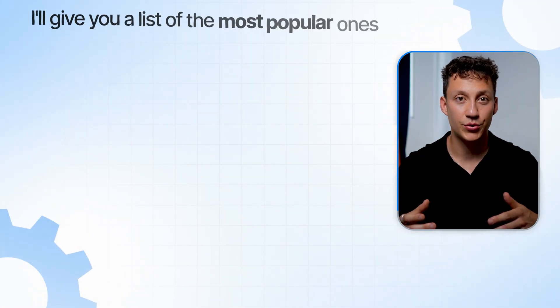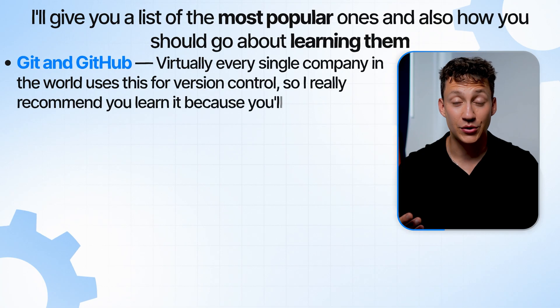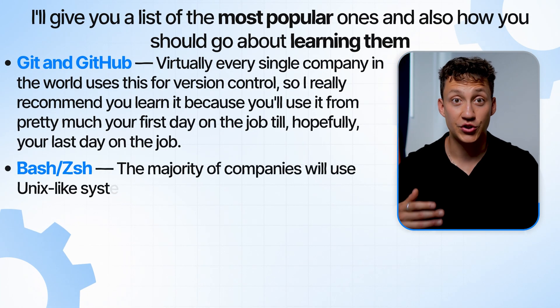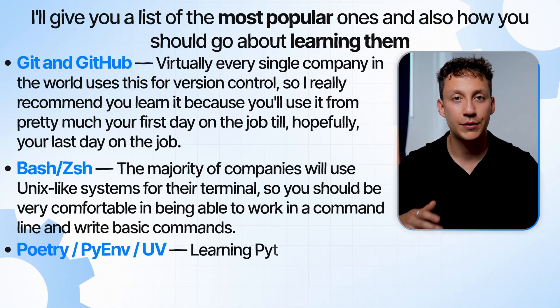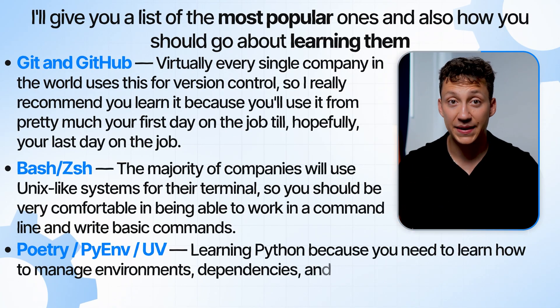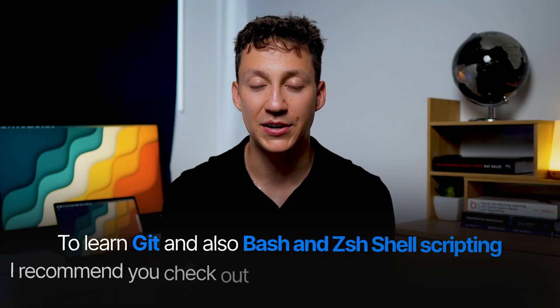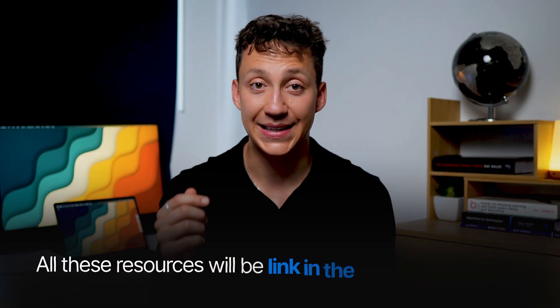As well as Python and SQL, it's well worth learning other technologies you'll use on the job. First is Git and GitHub — virtually every single company uses this for version control, so learn it because you'll use it from your first day. Second is bash or z-shell, as most companies use Unix-like systems, so you should be comfortable working in a command line. Finally, I recommend learning Python Poetry to manage environments, dependencies, and Python versions. For Git and bash, check out the free freeCodeCamp videos, and for Poetry, UV and PyEnv, check out the Real Python articles. All resources are linked in the description.